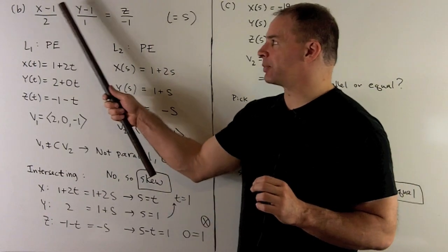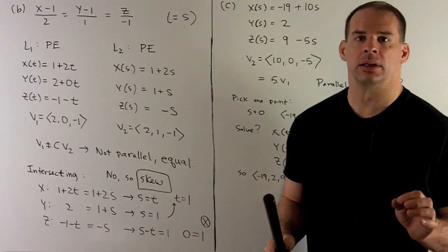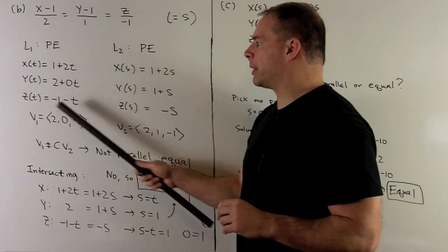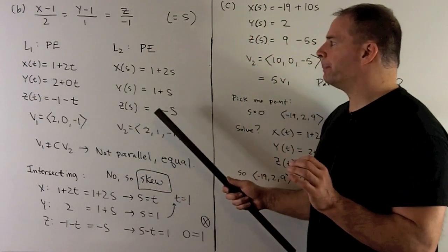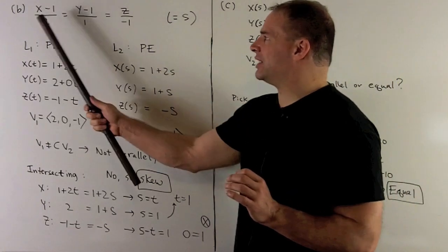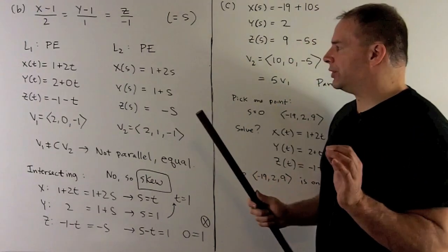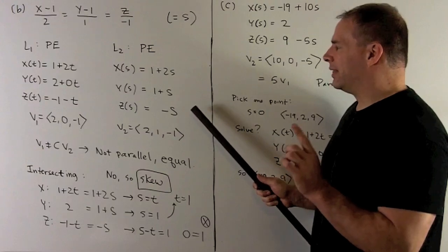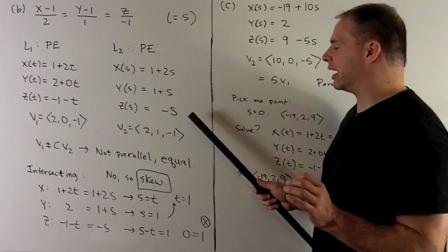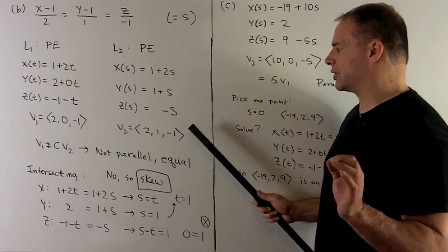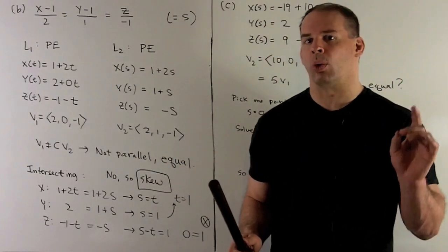For the next line, given by (x minus 1) over 2 equals (y minus 1) over 1 equals z over minus 1, we convert to parametric form by setting each expression equal to s and isolating x, y, and z. Peeling the coefficients off s gives the direction vector (2, 1, -1). Comparing with v1 = (2, 0, -1), these are not scalar multiples of each other, so the lines are not parallel or equal.